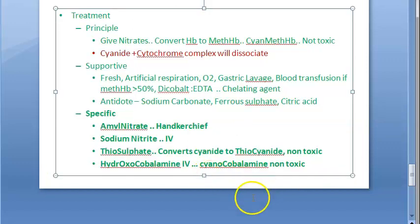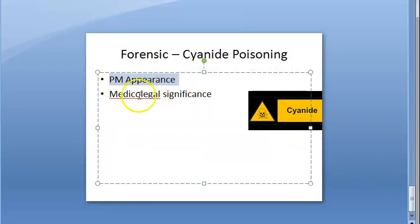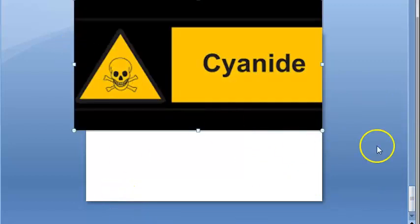Post-mortem recap: bitter almond odor, bright red postmortem staining, cyanosis of extremities, prominent dilated pupils, froth from mouth and nostrils, bitter almond odor in brain, hemorrhagic gastritis, petechial hemorrhages in brain, meninges, pleura, lungs, pericardium, pulmonary and cerebral edema. Medico-legal: used as suicide, homicidal is rare, judicial execution uses cyanide gas. That concludes the video on cyanide poisoning.